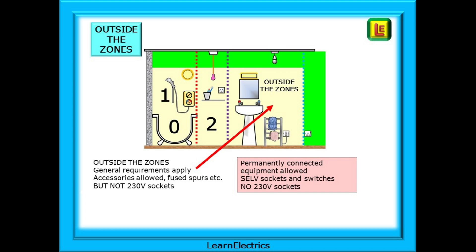Moving to the space called outside the zones — this used to be known as zone 3 many years ago, but not anymore; another exam catch-you-out, as lots of people still think of it as zone 3 when, according to the regs, it isn't. In this outside zones space, most of the general requirements of the regulations apply. Accessories such as fused spurs, switched FCUs, etc. are permitted, but not 230 volt sockets.